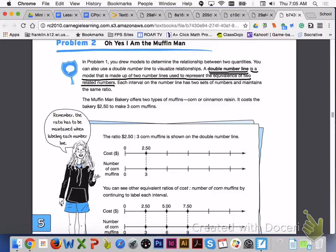Each interval on the number line has two sets of numbers and maintains the same ratio.